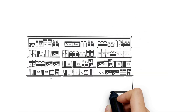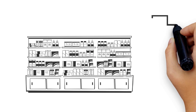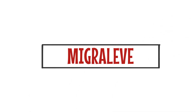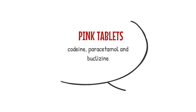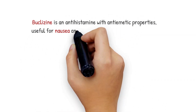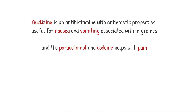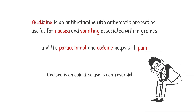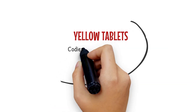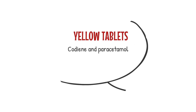Let's focus our attention on over-the-counter products available in a pharmacy. Migrelieve is available as pink and yellow tablets, which can be bought separately or as a combination known as Migrelieve Complete. The pink tablets include codeine, paracetamol and buclizine. Buclizine is an antihistamine with anti-emetic properties, useful for nausea and vomiting associated with migraines, and the paracetamol and codeine helps with pain. The yellow tablets contain just codeine and paracetamol.